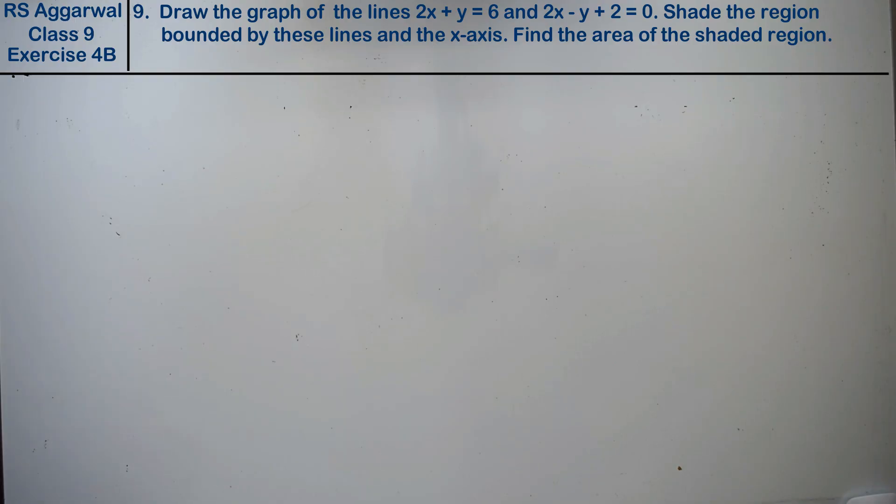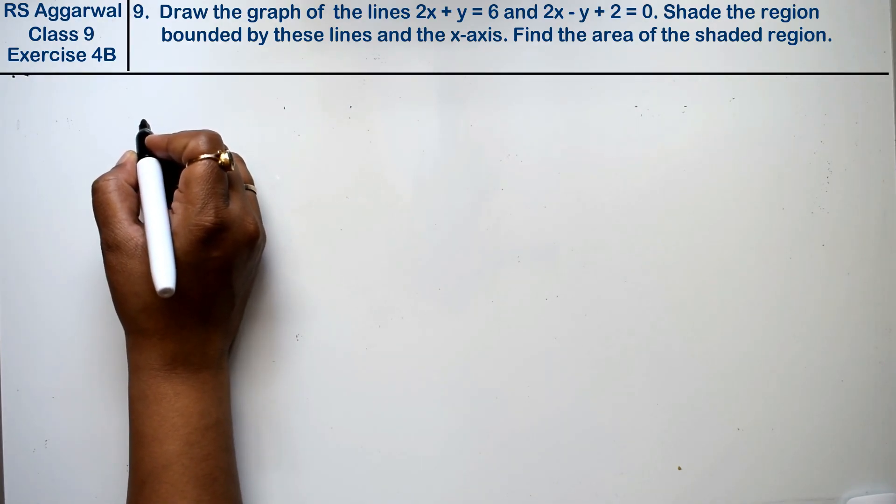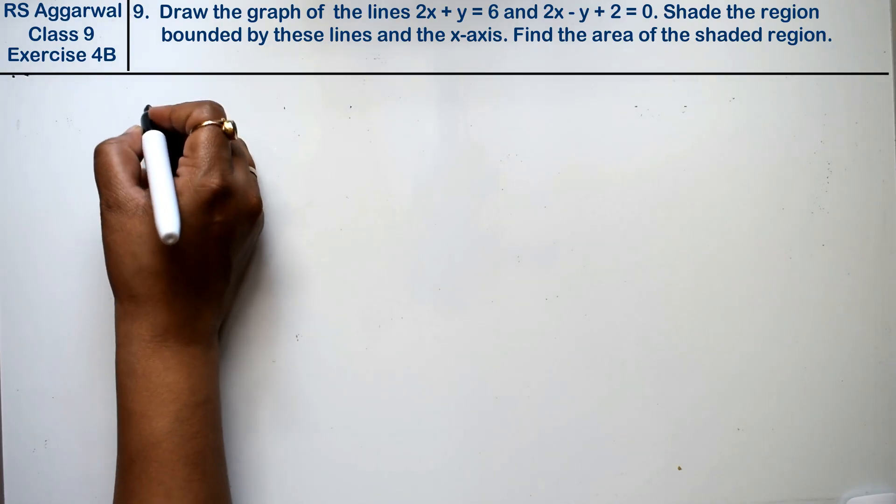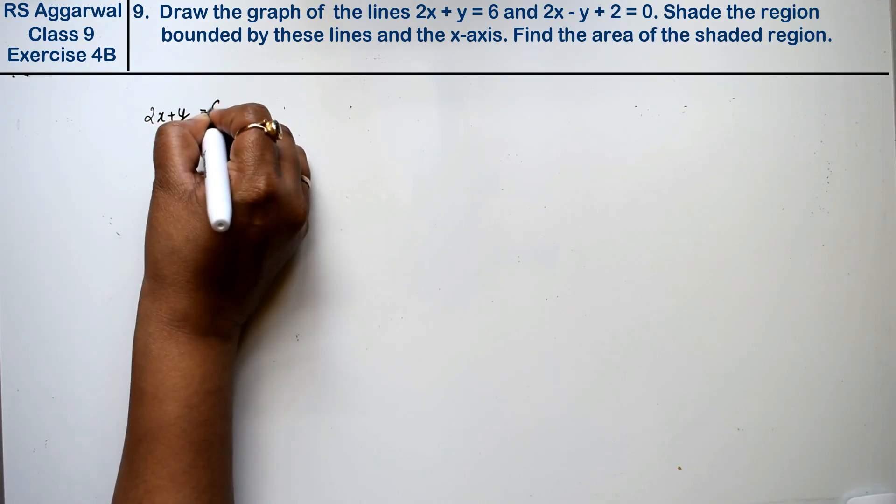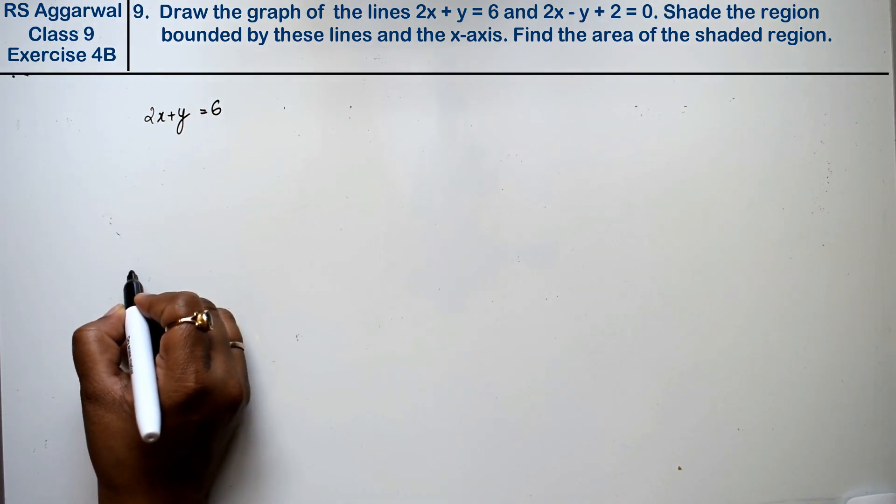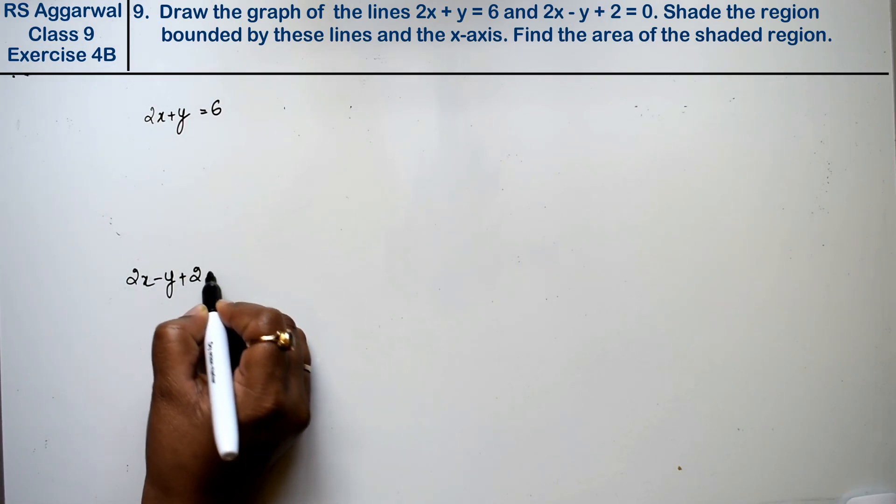Let's do question number 9 of exercise 4b, that is linear equations in two variables. Question number 9 is: draw the graph of the lines 2x plus y equals 6 and 2x minus y plus 2 equals 0.